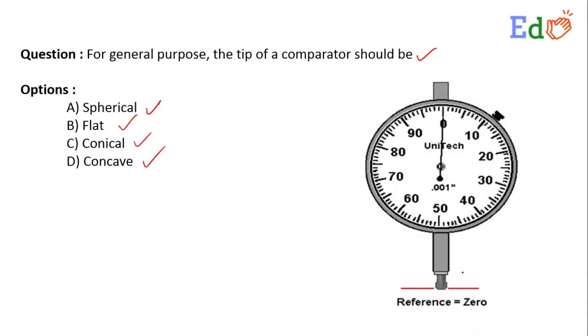That is a mechanical comparator. This is the point that is called the tip of a comparator, the dial test indicator tip.